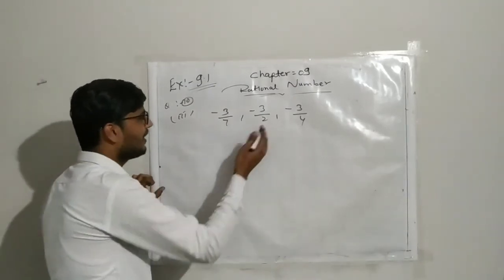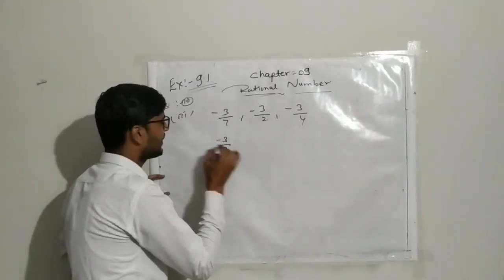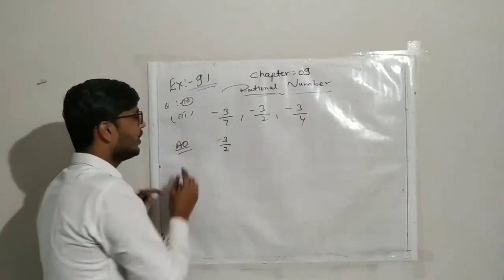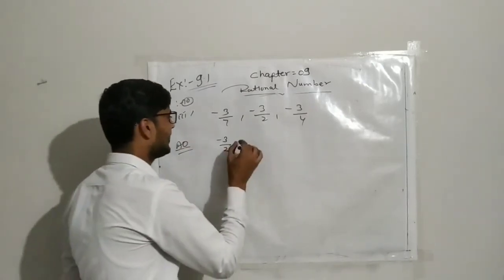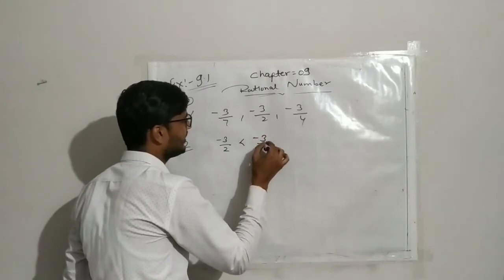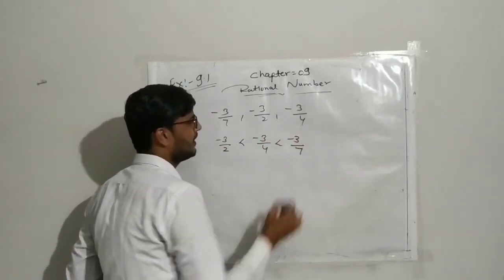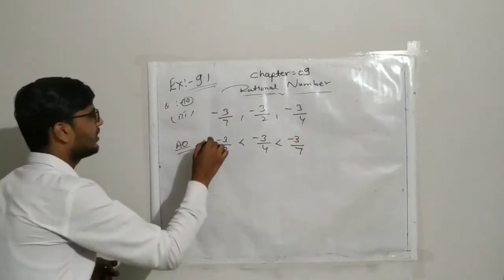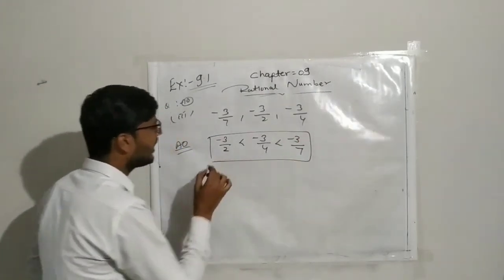So for the denominator, to write the ascending order of minus 3 upon 2, minus 3 upon 4, minus 3 upon 7 from lowest to highest: minus 3 upon 2 is less than minus 3 upon 4 is less than minus 3 upon 7. This is the ascending order of these numbers.